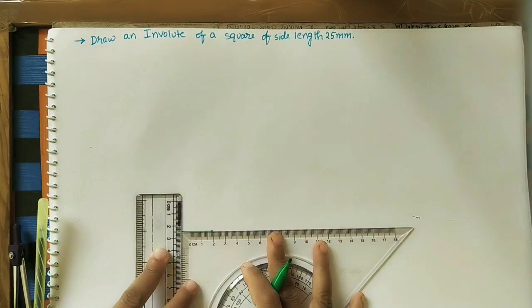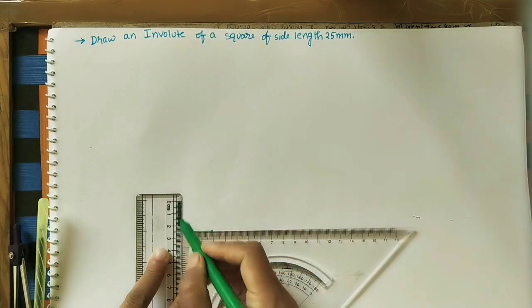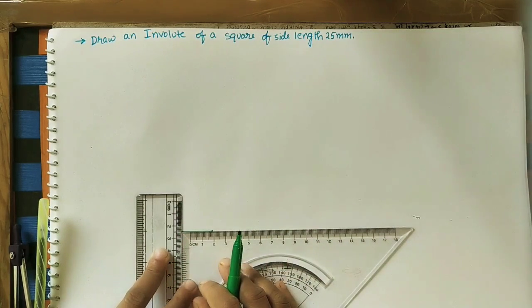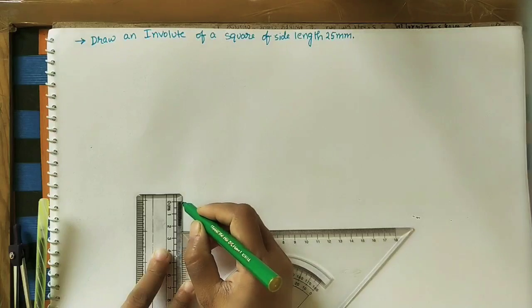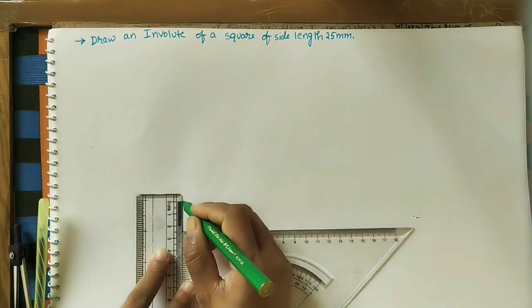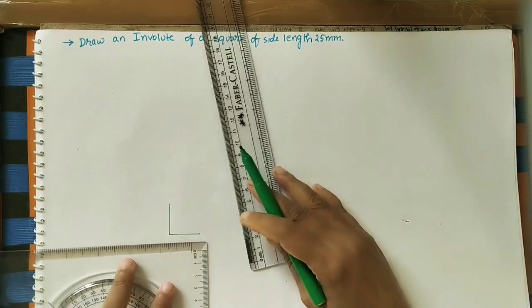For taking 90 degrees I am using this set square. Mark 2.5 cm, then on this side also take 2.5 centimeter.